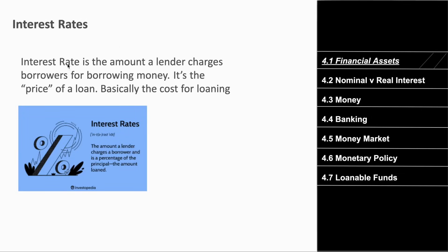The interest rate is simply the amount a lender charges borrowers for borrowing money — basically the price of a loan. If I loan you a thousand dollars, I want some profit from that. A zero percent interest rate means no rate of return, but a three percent interest rate per year on a thousand dollar loan means at the end of the year you owe me about thirty dollars.